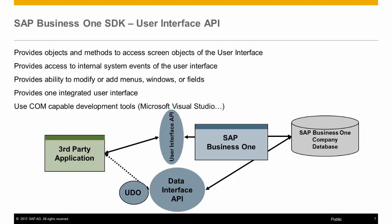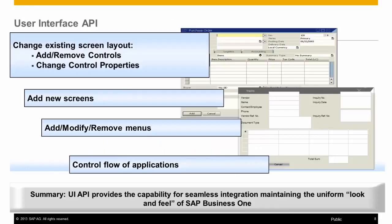The UI API, or User Interface API, is used to modify existing SAP Business One system forms and/or create new forms to SAP Business One as well as capture system events programmatically. The UI API allows for the ability to change existing system forms as well as add new forms, add, modify, and remove menu items, and control the flow of applications. Examples would be to add new fields or buttons to a system form such as sales orders.